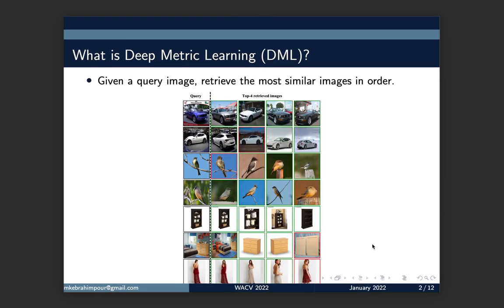What is Deep Metric Learning? Deep Metric Learning tries to learn representations where similar data are close to each other and dissimilar data are far away from each other. For instance, in this dataset, we are interested to search the dataset for these queries and retrieve the top similar images to the queries that we have.